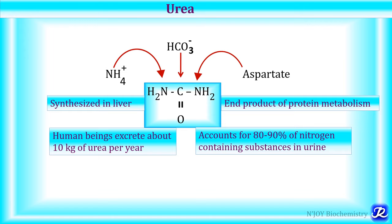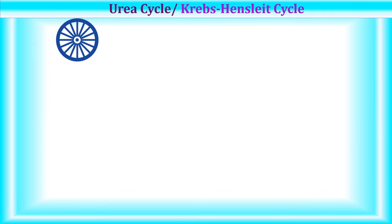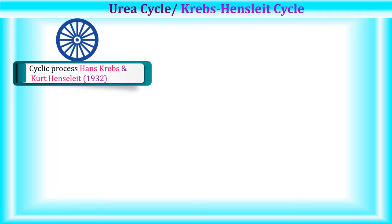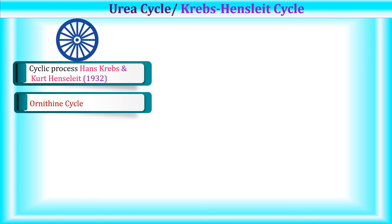Estimation of blood urea is used as a kidney function test for assessment of kidney dysfunction. The urea cycle is a cyclic process and was the first metabolic cycle to be discovered, even before the TCA cycle. It was first proposed by Hans Krebs and Kurt Henseleit in 1932, which is why it is also called the Krebs-Henseleit cycle. As ornithine is also involved, it is also called the ornithine cycle.